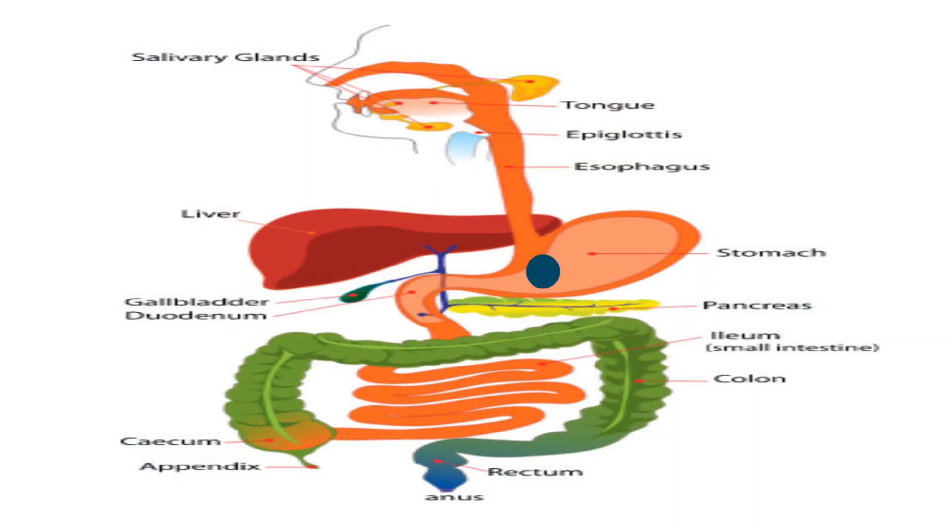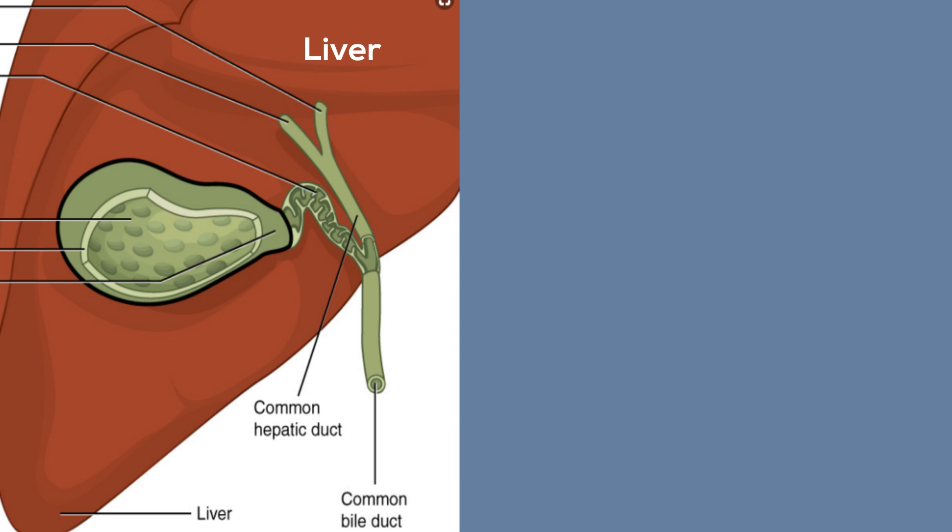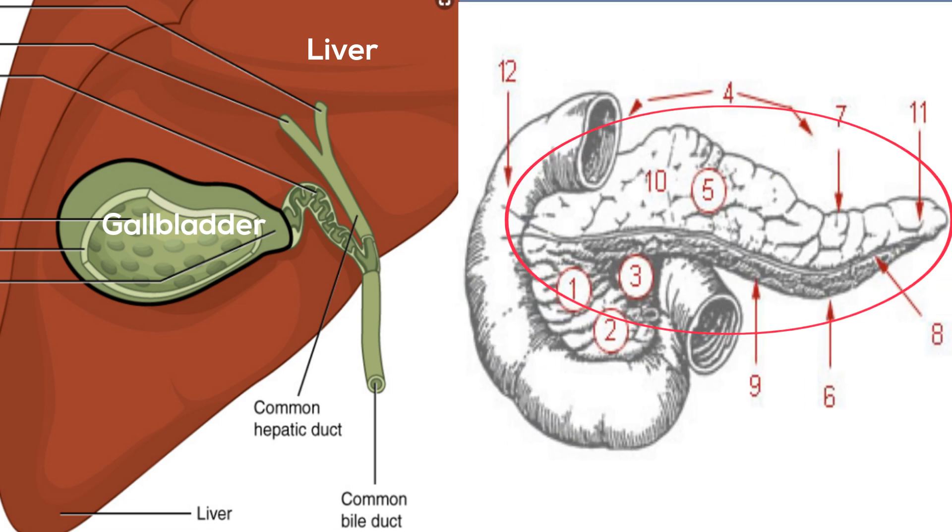The chyme is then passed to the first section of the small intestine. Here bile, which is created at the liver and stored in the gallbladder, begins to break down the fat. Enzymes created at the pancreas are also added to the food.